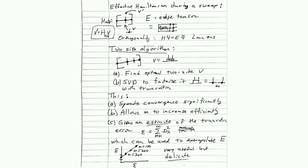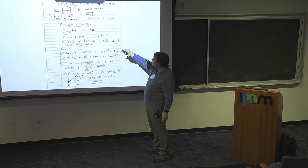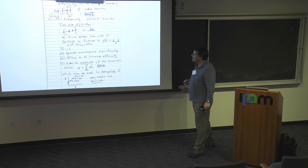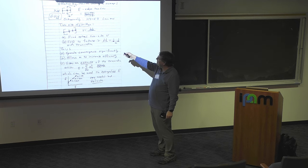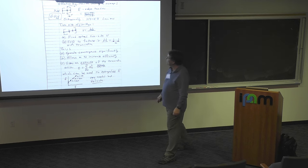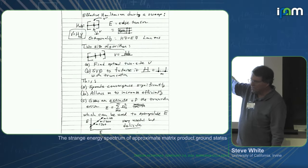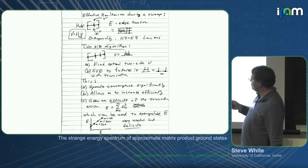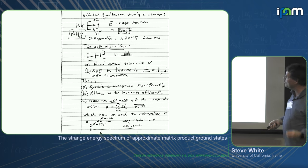The effective Hamiltonian used during a sweep diagrammatically has these edge tensors that look like an E. Those are a contraction of the half of the sandwich going off to the left until we just have these three external indices on the left — the left edge. We do the same thing on the right, looking at some site in the middle. We can say we have a vector v that we want to multiply by the Hamiltonian, working in this space of just these three indices. We stick it in and read out the answer v-prime. We never construct the actual object because it would scale as M to the fourth, but since it's already factorized, if you just multiply by the pieces, it'll be M cubed.